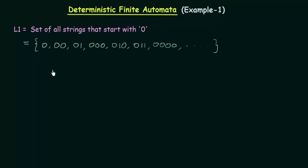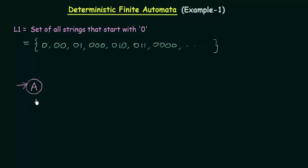Now let's see how we can design the DFA. Whenever you start a DFA, you should always begin with an initial state or start state. An arrow coming from nowhere pointing to a state indicates the starting state. So A is my starting state. Now, if I get input 0 in A, or input 1 in A, what will happen?